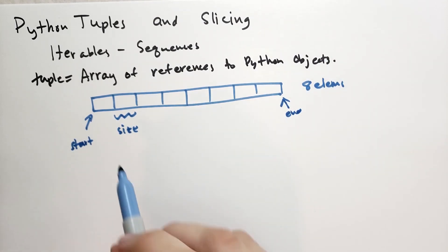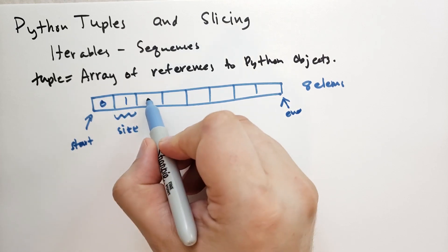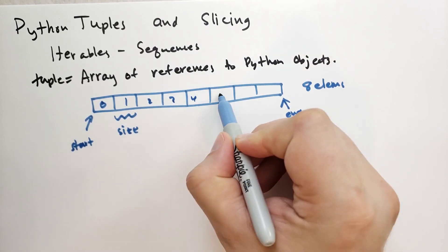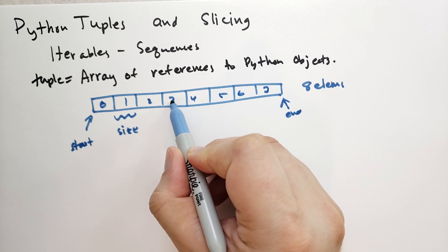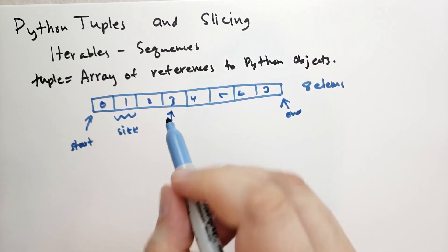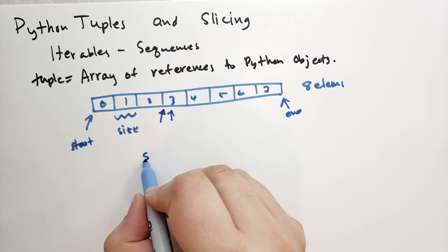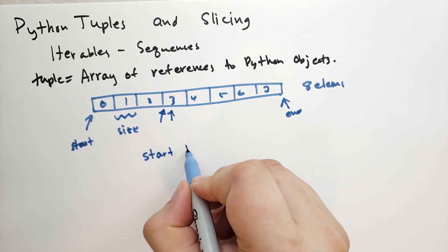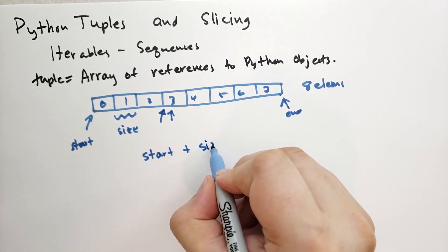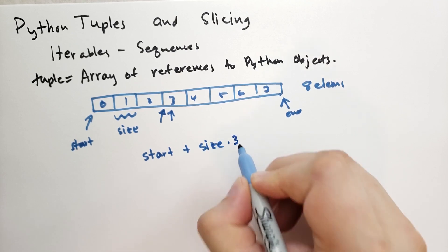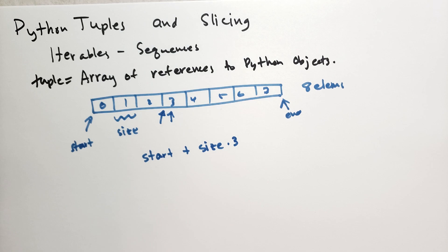And if we wanted to look up element, let's say element 3, we want to find where does that element start. So what we do is we take start, and then we add the size times 3. And that will give us the starting point of that element. So we can look at that element and just jump right to it in memory.